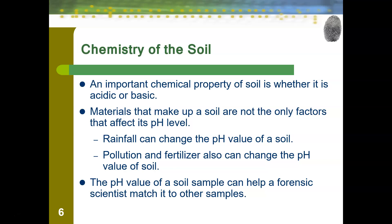Pollution is another big factor — it can create things like acid rain, which can acidify soil, or the pollution itself can be acidic or basic and get put into the soil. Additionally, fertilizers can make soil more acidic or basic, depending on what growing conditions the person is trying to replicate. We can change the pH value of the soil either accidentally or on purpose. The pH value of a soil sample can help a forensic scientist match it to other samples, allowing us to assign a numerical chemical characteristic rather than just saying they look similar.